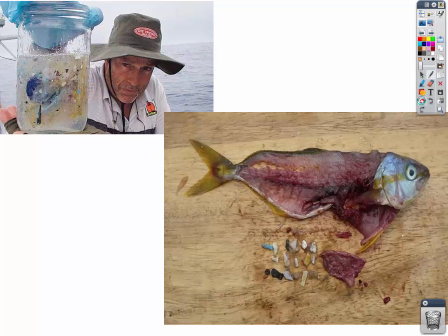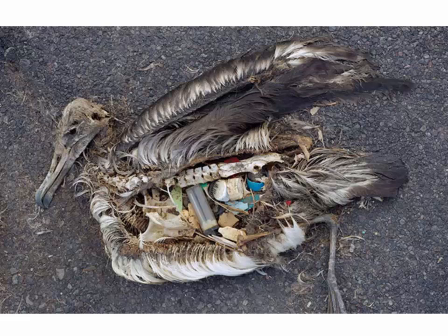The Great Pacific Garbage Patch isn't limited to the Pacific — we're seeing this in all the oceans. A striking example is a bird found with many pieces of plastic in its innards, having died of starvation. Birds see bottle caps floating in the ocean and mistake them for food — eating lighters, bottle caps, and other plastic pieces that get lodged in their intestines, making it hard to digest food. We're seeing a tremendous impact on wildlife.